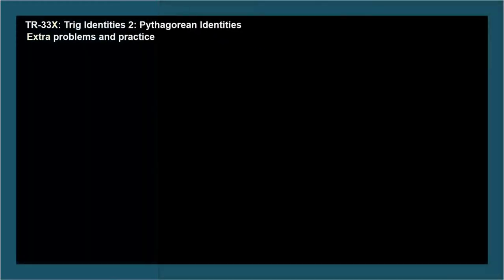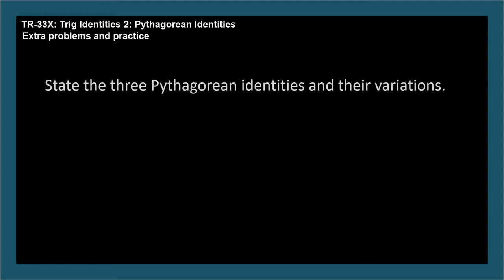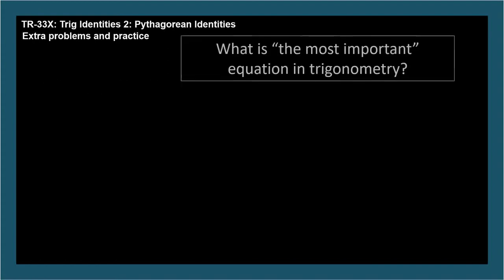The learning objectives for TR-33 are state the three Pythagorean identities and their variations. I call the particular identity the most important equation in trigonometry. What is it?